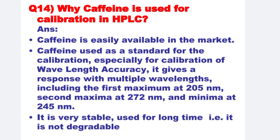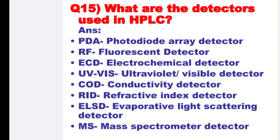Next: Why is caffeine used for calibration in HPLC? Caffeine is easily available in the market. Caffeine is used as a standard for calibration, especially for calibration of wavelength accuracy. It gives a response at multiple wavelengths, including the first maxima at 205 nm, second maxima at 272 nm, and minima at 245 nm. It is very stable, can be used for a long time, and is not degradable.